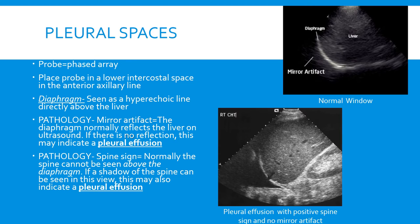The first thing I want to point out in that picture is the diaphragm, which is a hyperechoic line directly above the liver. Remember, above the liver is to the left of the screen because we have the indicator pointing towards the patient's head. On either side of the diaphragm we see what looks like liver — this is a normal finding caused by the diaphragm being very reflective, bouncing the sound wave back and making it appear as if there's liver on both sides of it.